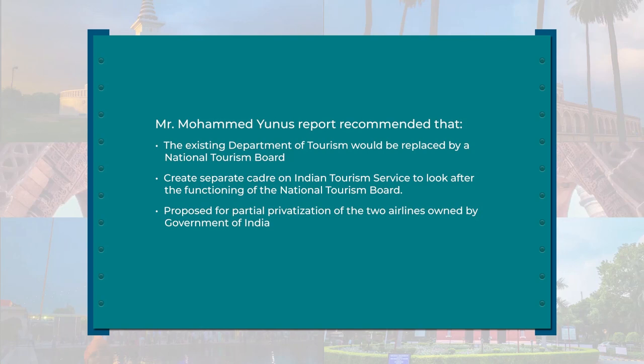Mr. Muhammad Yunus' report recommended that the existing Department of Tourism would be replaced by a National Tourism Board. It also recommended creating a separate cadre on Indian Tourism Service to look after the functioning of the National Tourism Board, and proposed partial privatization of the two airlines owned by the Government of India. The outcomes included that by September 1987, the central government declared more concessions for the tourism sector, including tax exemption on foreign exchange earnings from tourism, 50% reduction on rupee earnings, and 100% reduction on earnings in dollars.